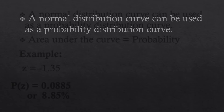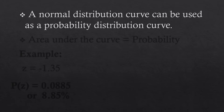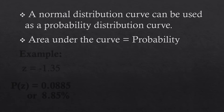Previously, we already discussed what is a normal distribution curve, and this time it will also be used as a probability distribution curve. We already determined how to get the area under the curve of a normal distribution. That area is also the probability. Since the whole area under the normal curve of that bell shape is approximately 1 or equals to 100%, we can also obtain the probability from that area. Let's have an example.